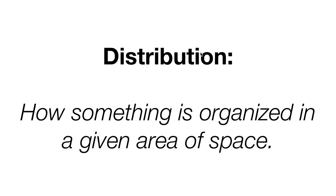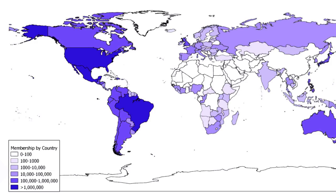Distribution is how something is organized in a given area of space — the arrangement of a specific phenomenon, issue, or set of objects in a given area; more so the way that something is spread out over the earth. This map shows the distribution of members of the Latter Day Saints Church, or the Mormons. Their distribution around the world is mostly concentrated in North and South America, and other areas like Northern Europe, Japan, and Australia.